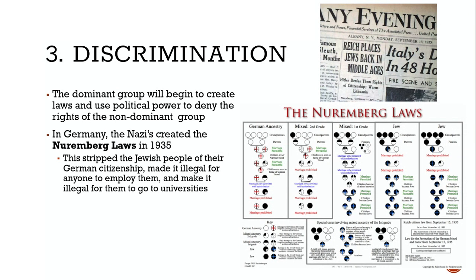Stage three is discrimination. Here the dominant group begins to create laws and use political power to deny the rights of the non-dominant group. Canada itself has had many discriminatory laws in the past. In Germany, the Nuremberg Laws of 1935 stripped Jewish people of their German citizenship, made it illegal to employ them, and made it illegal for them to attend universities.